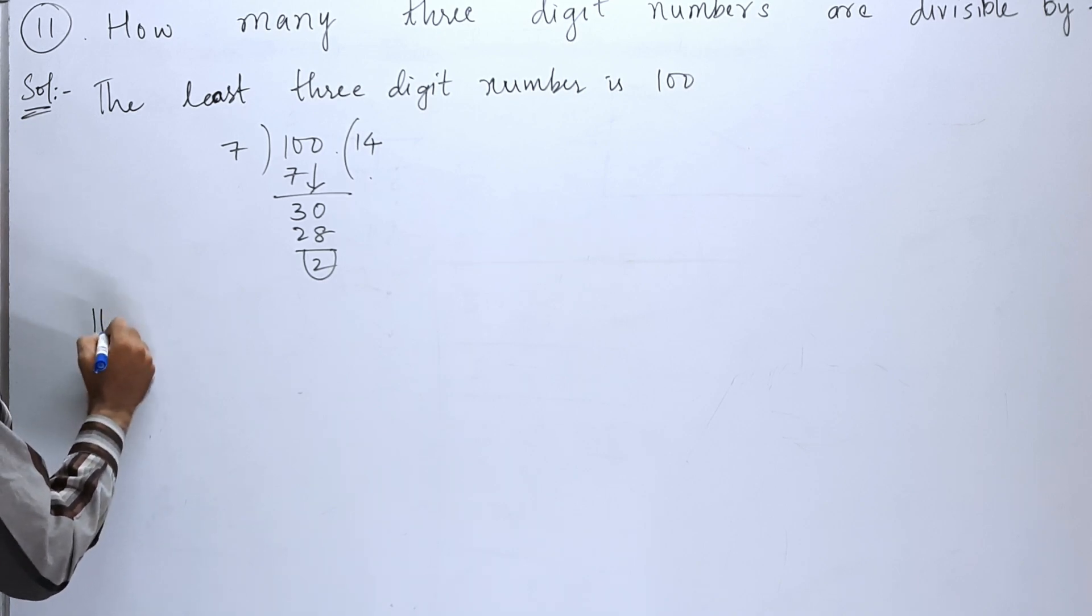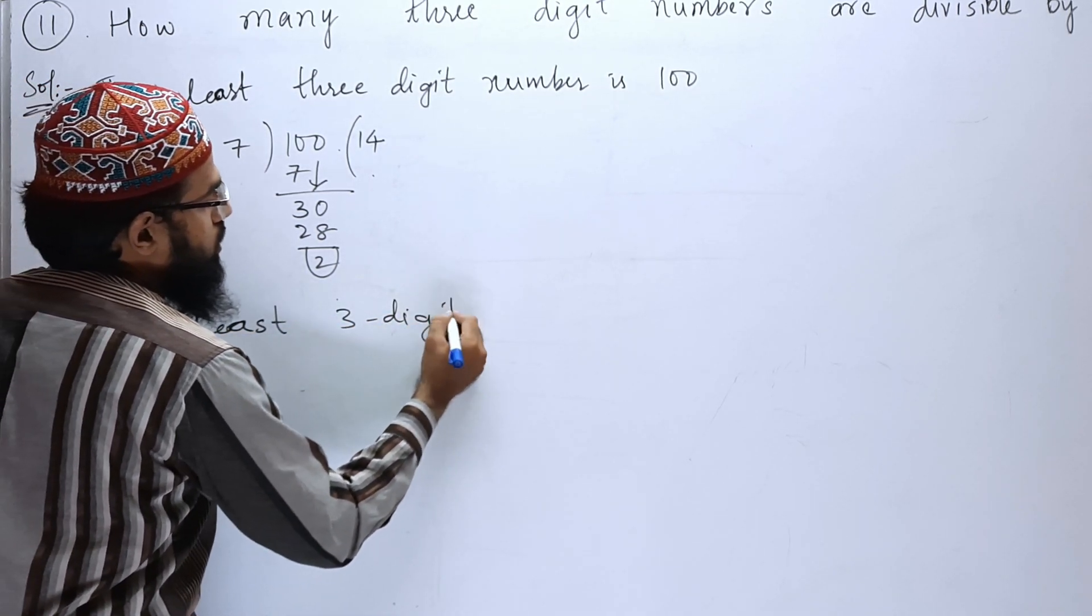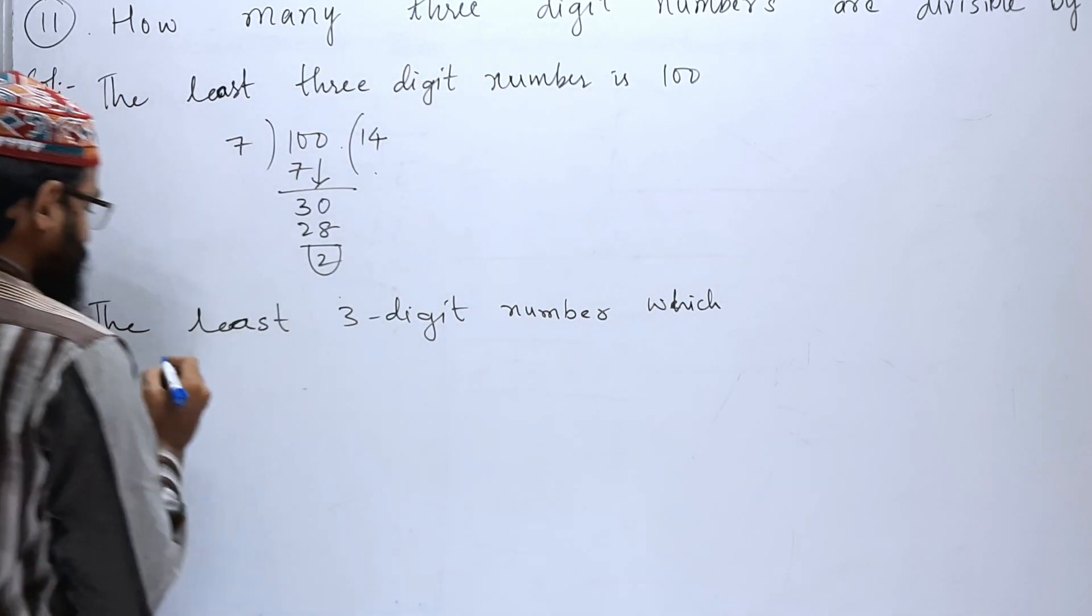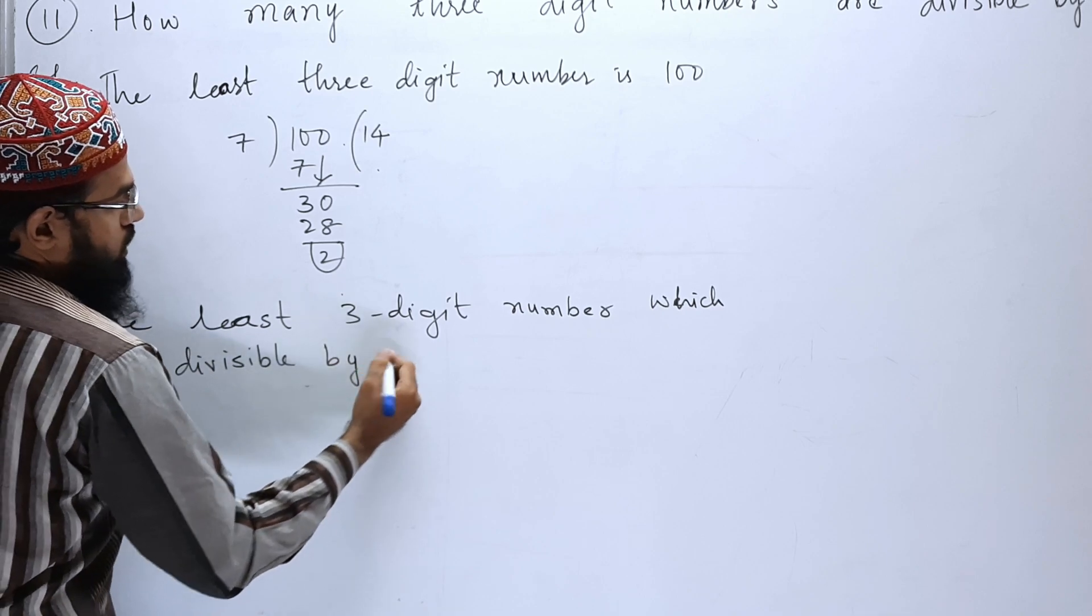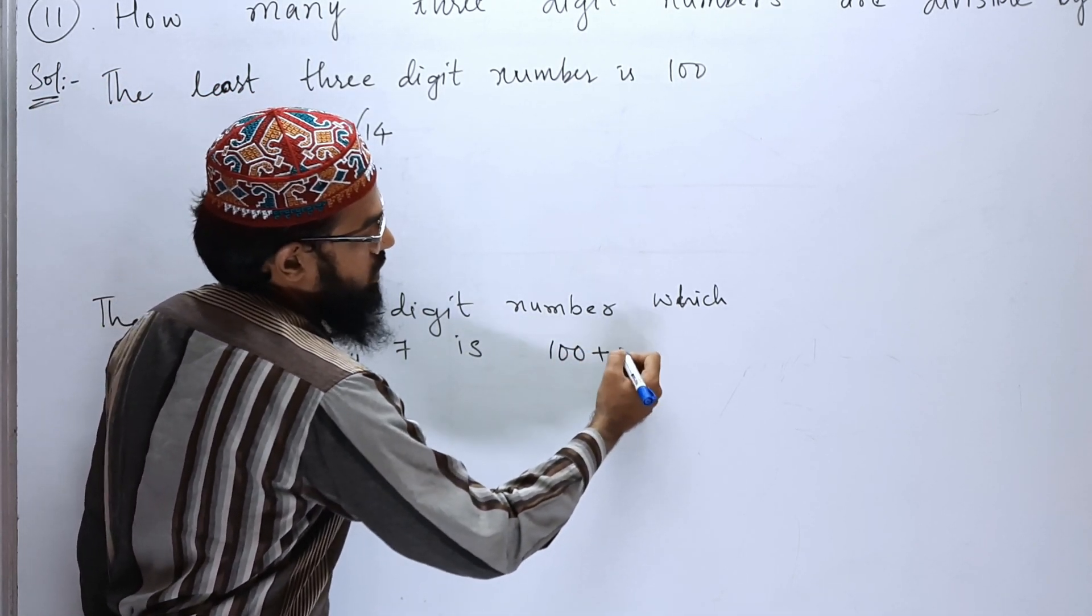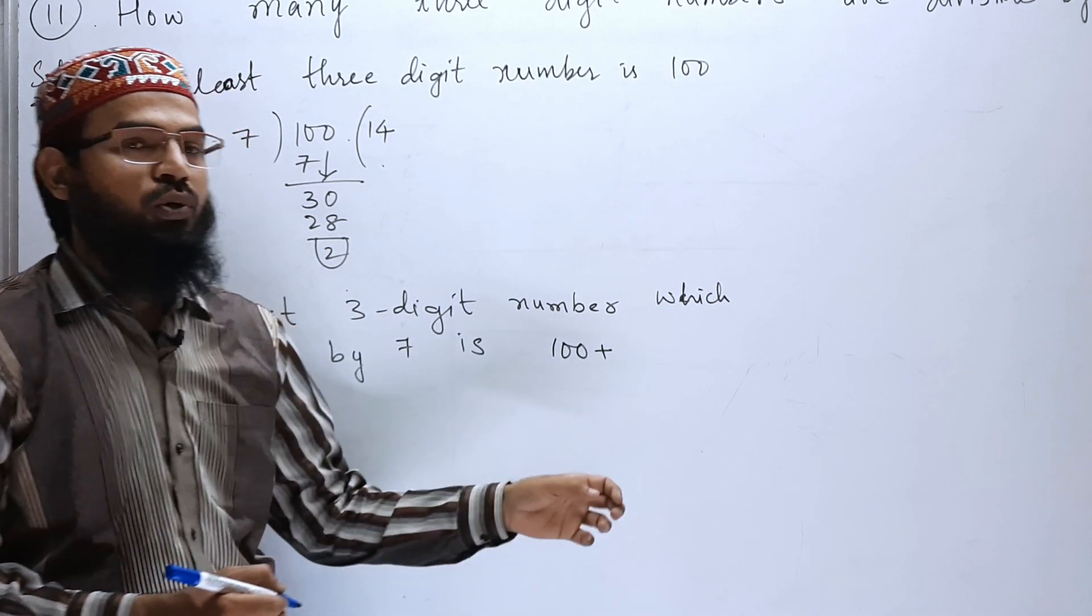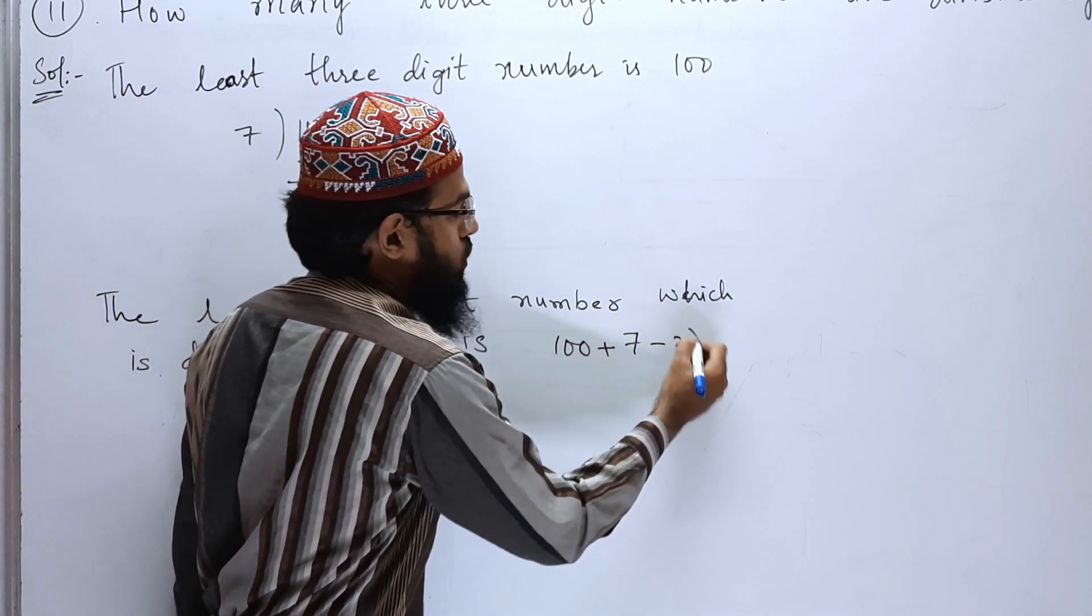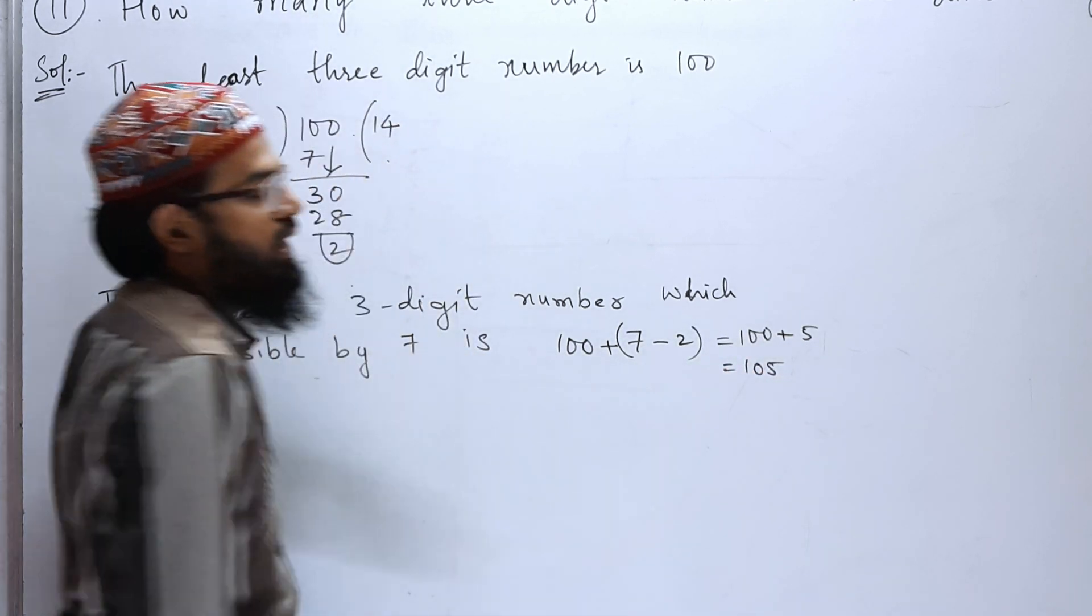Now let us write the least 3-digit number which is divisible by 7. So how are we going to write? So 100 plus, as we are seeing with 7, the number is 7. Divisible by 7 means we have to add 7 to this, but here the remainder is 2, that's why we have to subtract 2. 7 minus 2, that will be 100 plus 7 minus 2 is 5. So 105, the number is 105.